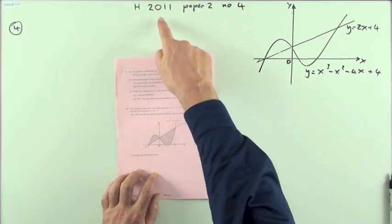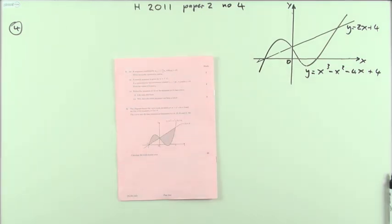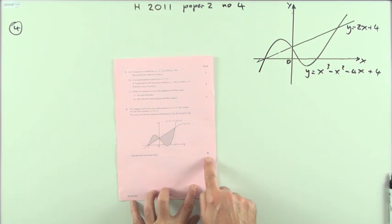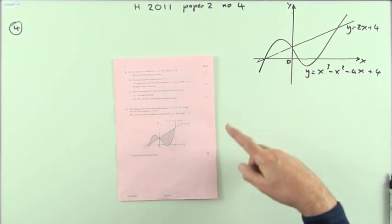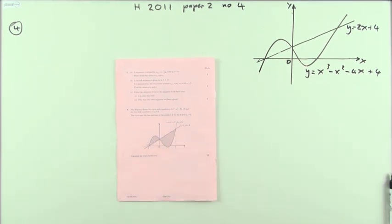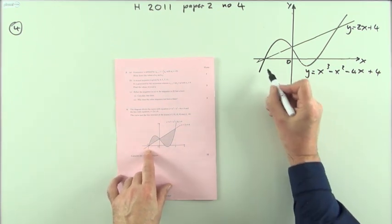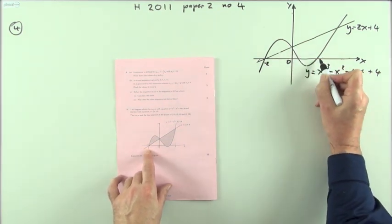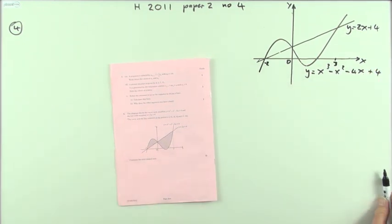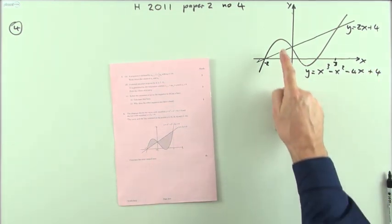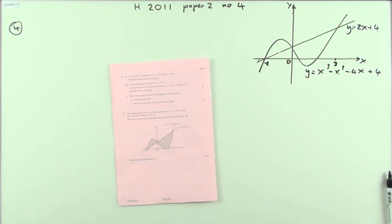Number four from paper two of the 2011 higher exam: find the area between two curves, 10 marks. You don't even have to work out the points of intersection - it tells you them all. It crosses at negative two, zero, and three. You have to be careful because these two areas will have to be worked out separately because they've got different tops.